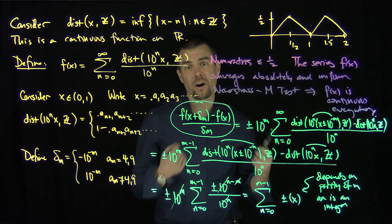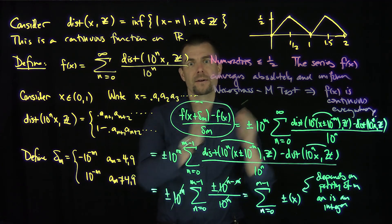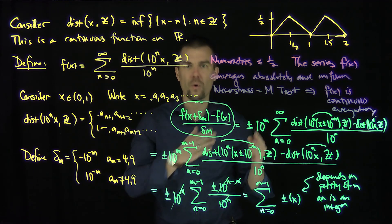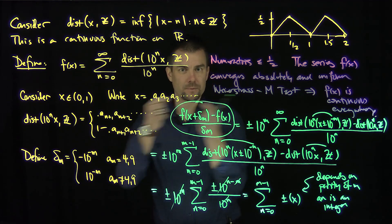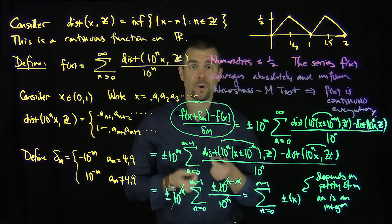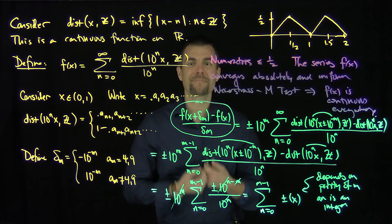Now, I can run the same argument for different values of x that are not in (0,1) just by shifting over, because if I do it between 1 and 2, all I have to do is modify that by shifting that back to the interval (0,1). So this function is not differentiable at a single point, but it's continuous everywhere. Thank you very much.